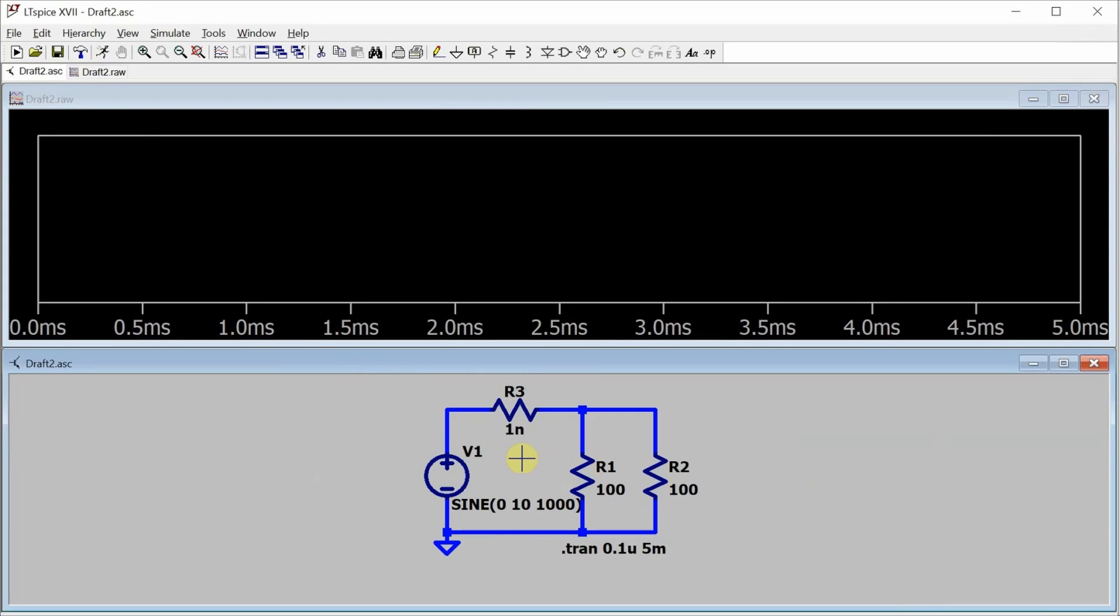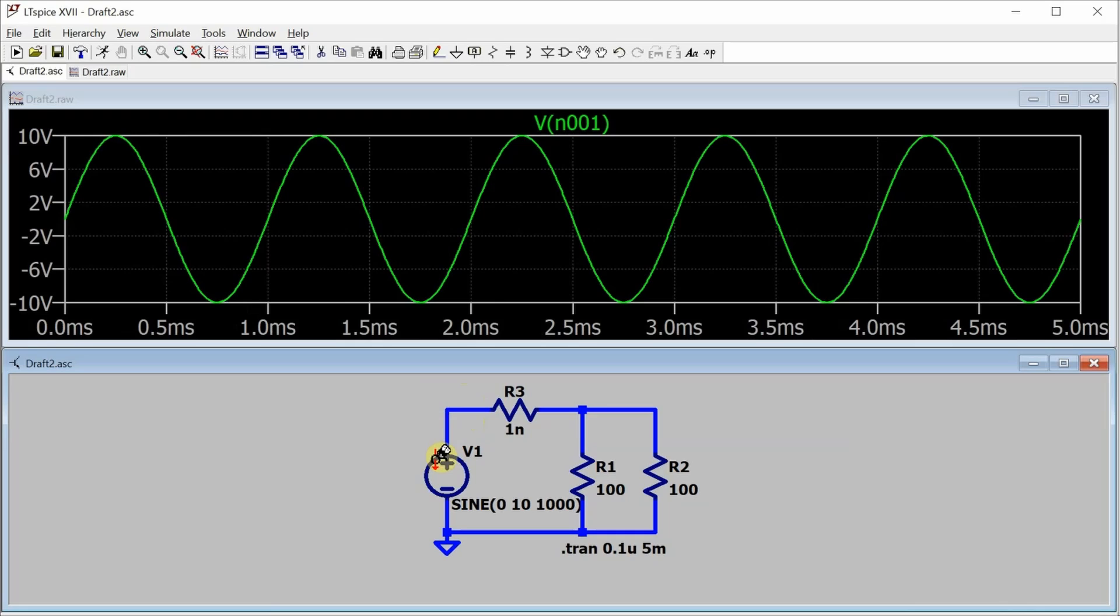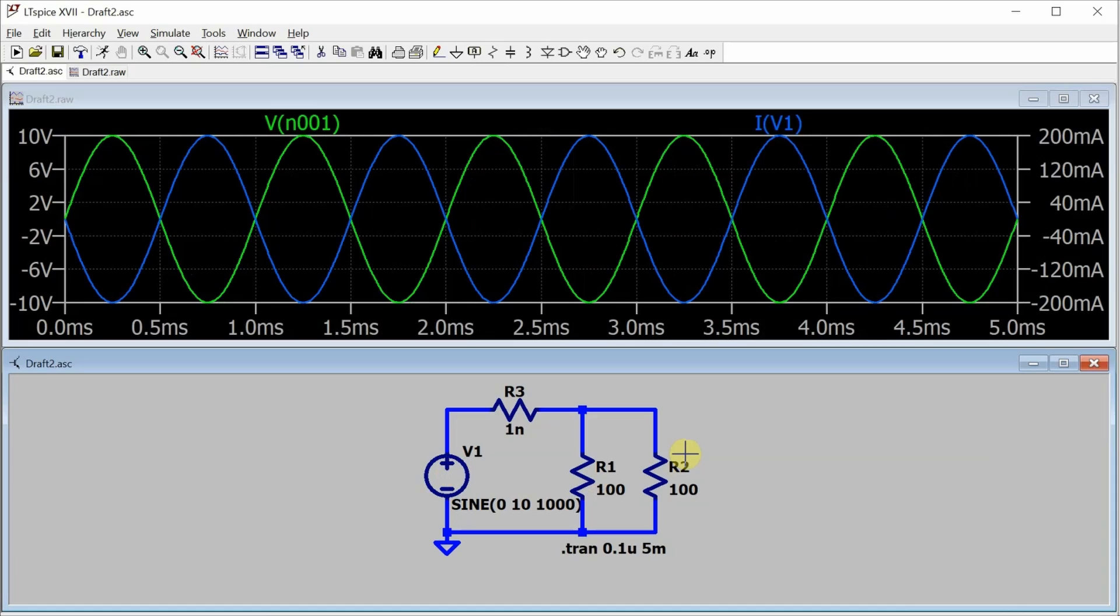Now let's simulate. Okay, so I definitely want the node voltage here. So I'll click on that node voltage. And you can see there's my 10 volt sine wave. And I also want the current. I could click on the voltage source here. And I'll do that. But take a look at the direction that the arrow is pointing. It's actually pointing in the opposite direction that I want. And so you can see that the voltage and the current are out of phase with each other. But we know that they're not.